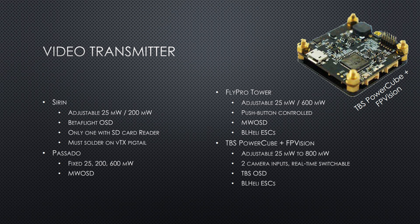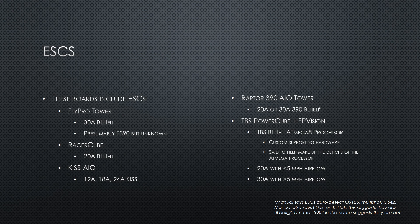The TBS PowerCube and FPVision has adjustable transmit power from 25 to 800 milliwatts, two camera inputs with real-time switching, the TBS OSD, and BLHeli ESCs. The FlyPro Tower is controlled by a push button on the side of the board rather than through the OSD, runs MWOSD, and has BLHeli ESCs on board. For boards with ESCs: the FlyPro Tower has 30-amp BLHeli ESCs, the Racer Cube has 20-amp BLHeli ESCs, KISS has KISS ESCs at 12, 18, or 24 amps, the Raptor 390 All-in-One Tower has 20 or 30-amp BLHeli ESCs, and the TBS PowerCube has BLHeli ESCs running an ATmega 8 processor, with custom supporting hardware like gate drivers that they say makes up for the ATmega's deficits.